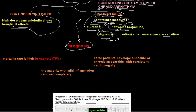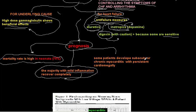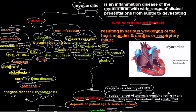The prognosis of myocarditis is poor — mortality rate is high, especially in neonates at about 75%. The majority of patients with mild inflammation will recover completely. However, some patients will develop subacute or chronic myocarditis with cardiomegaly and sometimes irreversible cardiac changes.